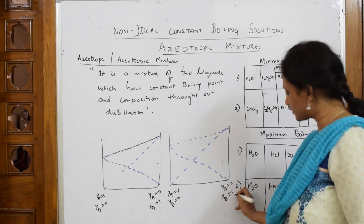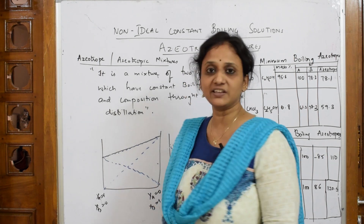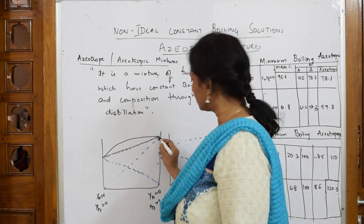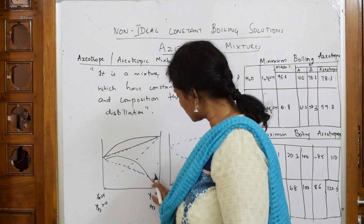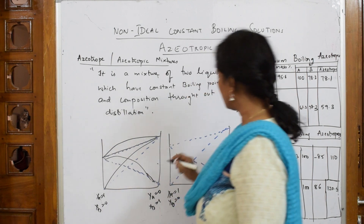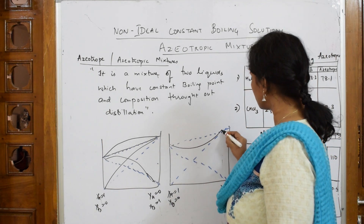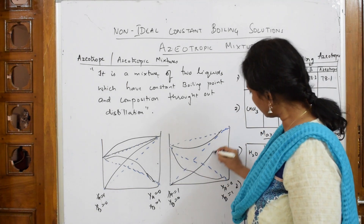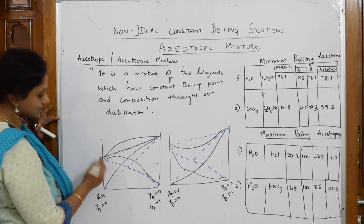Whenever a solution shows positive deviation, the interactions between A and B are weaker compared to the A-A and B-B interactions — so the solution shows positive deviation above the ideal solution line. When the A-B interactions are stronger, they show negative deviation compared to the ideal solution.